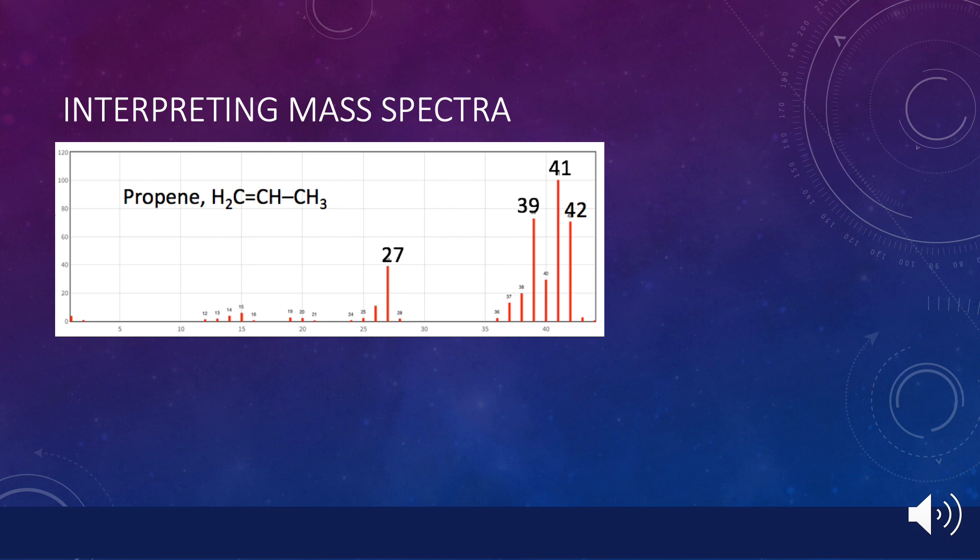So how can we interpret this spectrum? What is this graph telling us? A close look at the graph leads to several observations. The highest mass peak usually represents the molecular weight of the whole molecule. In the spectrum here, its mass is 42, and this arises from molecular ions that remain intact.